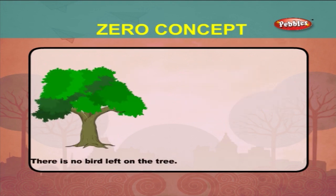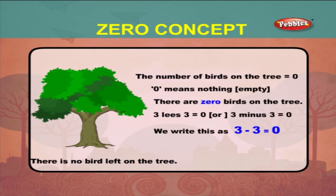there is no bird left on the tree. The number of birds on the tree is equal to zero. Zero means nothing. There are zero birds on the tree. Three less three is equal to zero, or in other words, three minus three is equal to zero. We write this as 3 minus 3 is equal to zero.